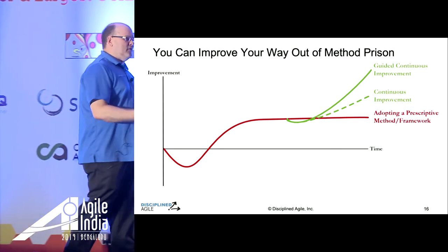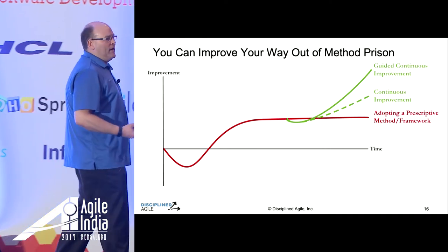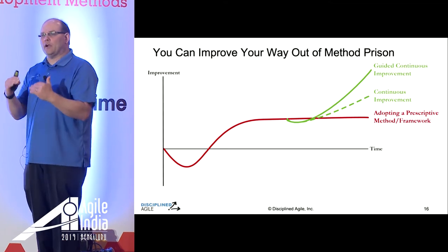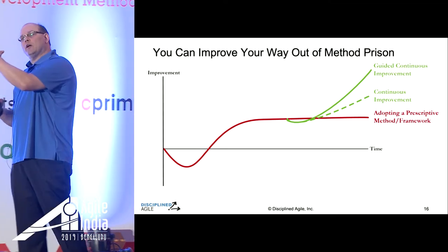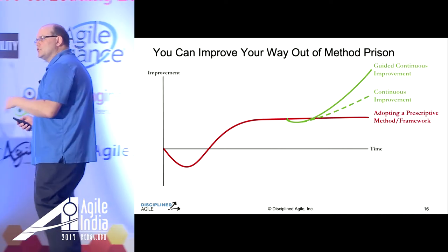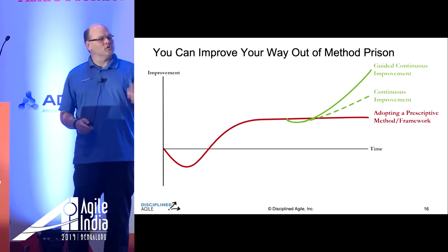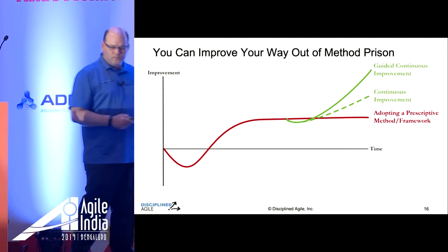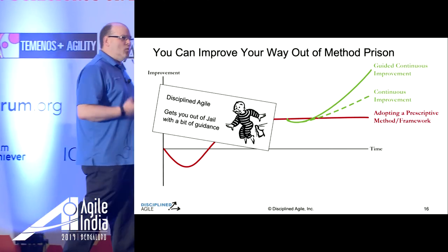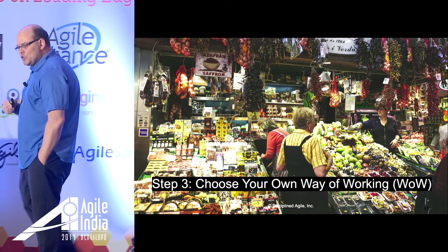So it can be Scrum plus DA, or SAFe plus DA, to help you solve the problems you actually face. We can get out of jail with just a little bit of guidance. How do we keep this lightweight? How do we make this simple and easy for you? How do we choose our way of working — that is the fundamental question here. Another way to look at it is: how do we be a better Agile chef?